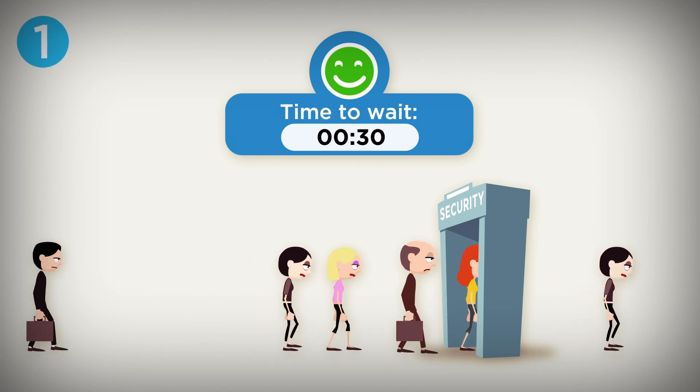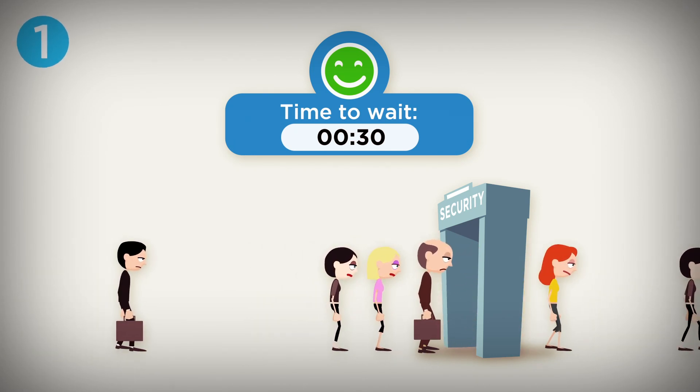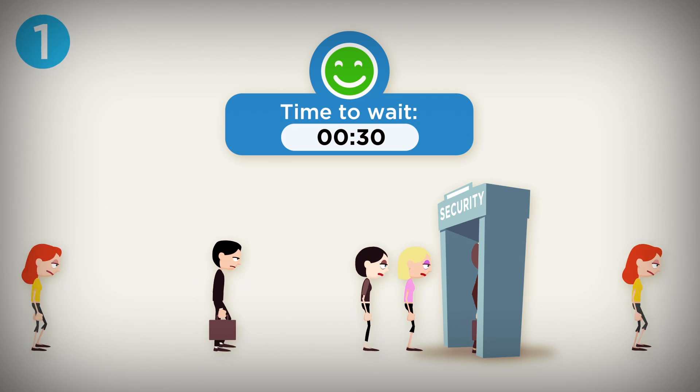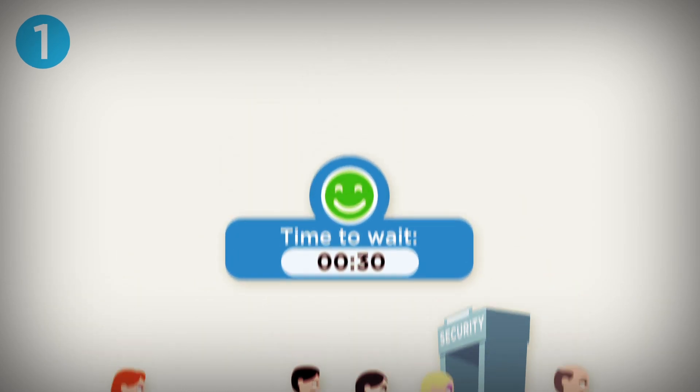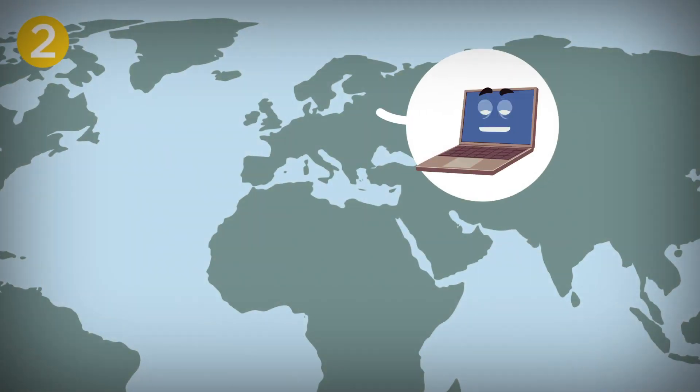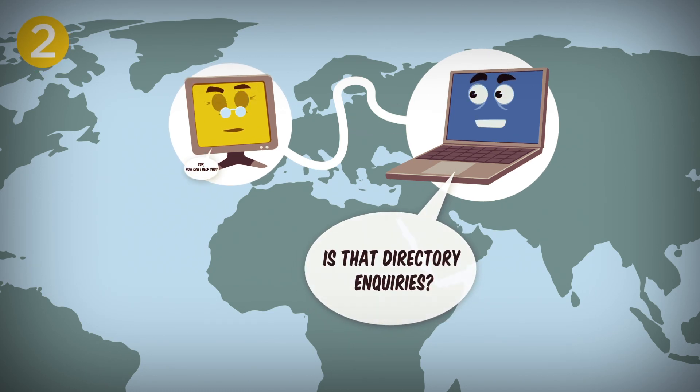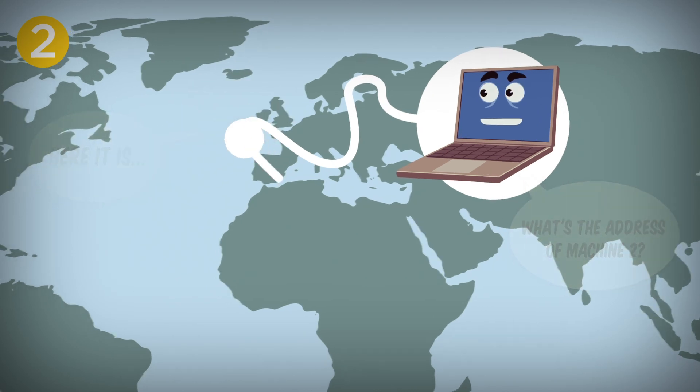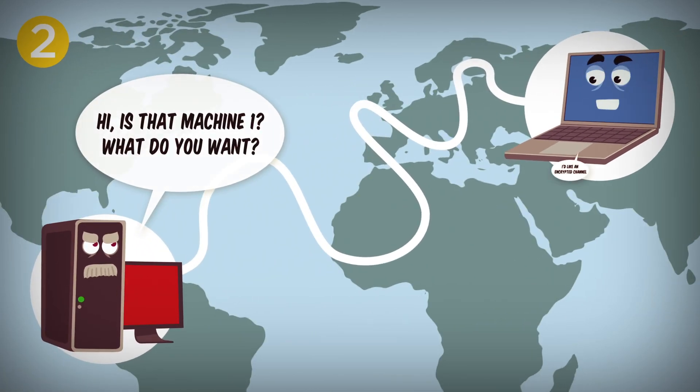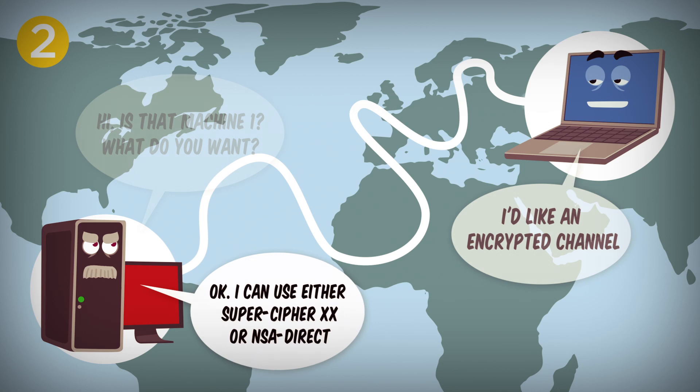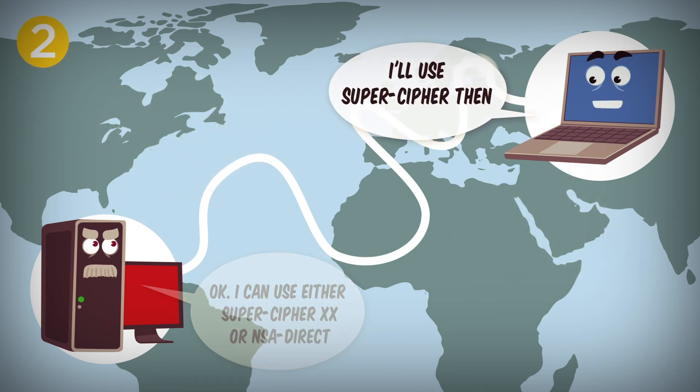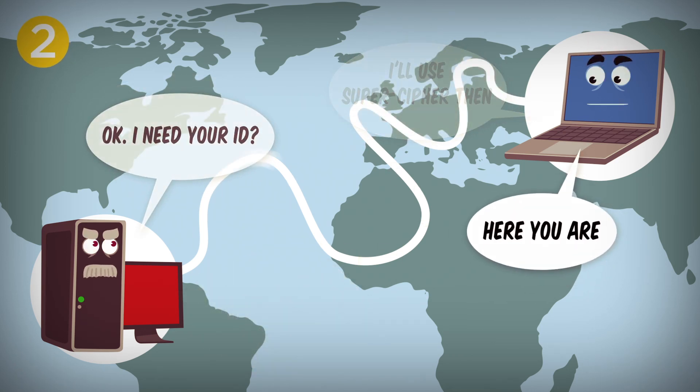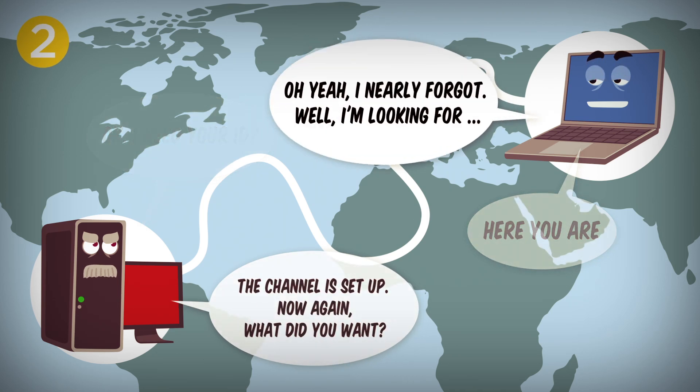Second, before you can interact, your device and the computer at the other end need to agree on how to talk to each other. For instance, if you need to secure your communication. The delay of all these back and forth messages is compounded by the speed of light problem and the long queues problem.